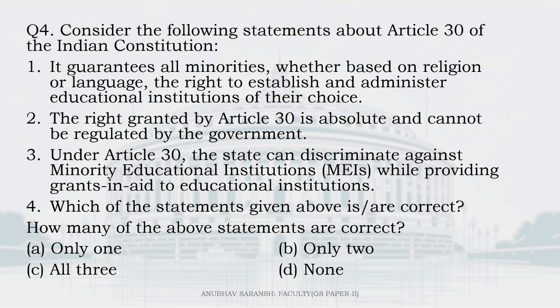Moving on to question number 4: consider the following statements about Article 30 of the Indian Constitution. Statement 1: it guarantees all minorities, whether based on religion or language, the right to establish and administer educational institutions of their choice. This is Article 30, Clause 1. Our constitution recognizes two types of minorities — based on religion and based on language — though it does not define what constitutes each. Statement 1 is correct.